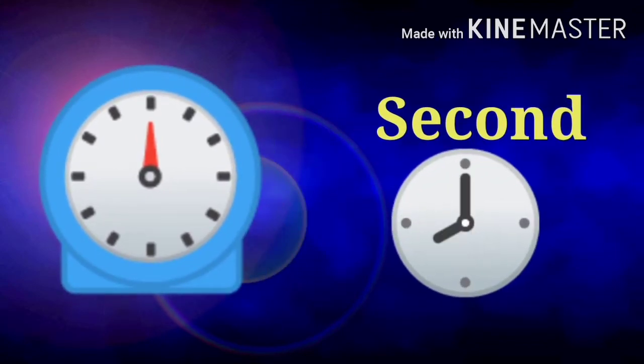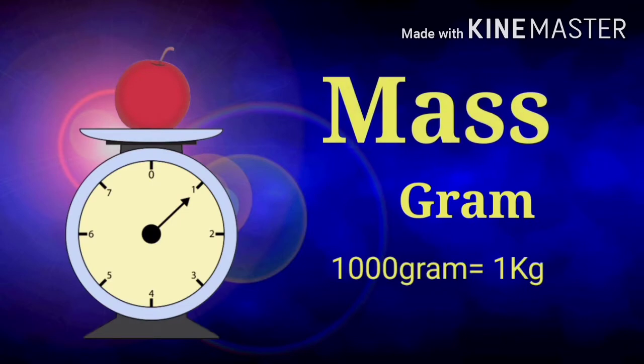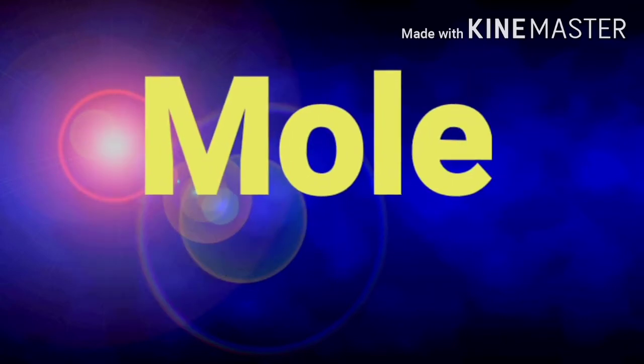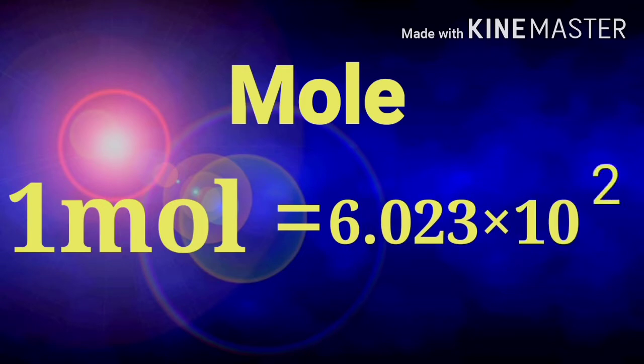The unit of time is the second, the unit of distance is the meter. The unit of mass is the gram, and the value of mole is approximately 6.023 times 10 to the power of 23.